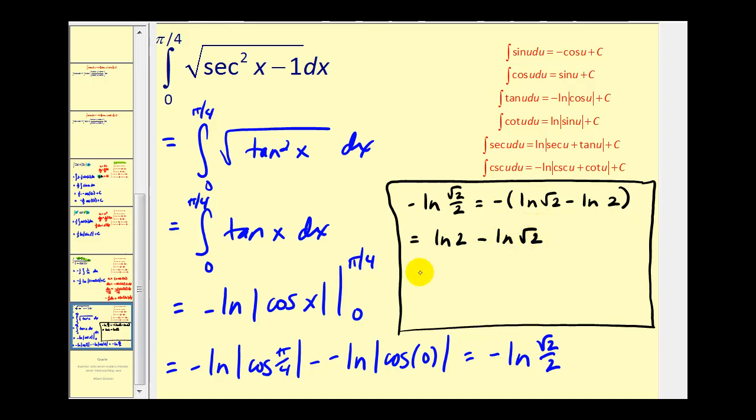Remember the square root two is the same as two to the one-half power. So this would be natural log two minus natural log two to the one-half. And of course now we can apply the power property of logs. So we'd have natural log two minus one-half natural log two which would give us one-half natural log two.